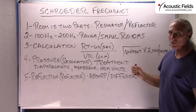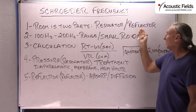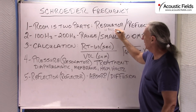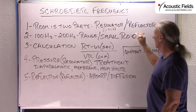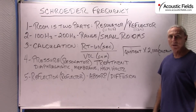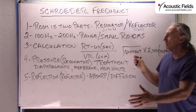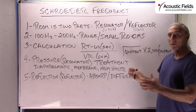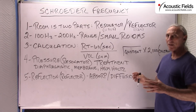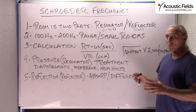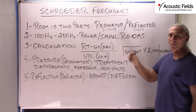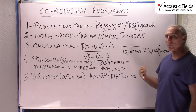He said the room is basically two parts: we have a resonator and a reflector. The resonator deals with wave energy or low frequency, and the reflector deals with ray energy, which is the middle and higher frequencies. So Schroeder is telling us that the room is really two parts. A lot of people don't get that — they think it's just one part — but it really has two parts, and the energies and the problems each part has are completely different.